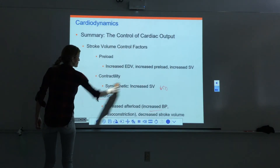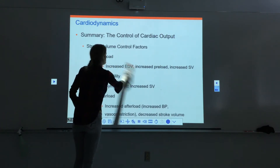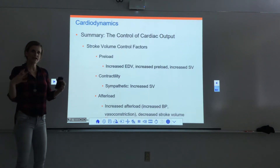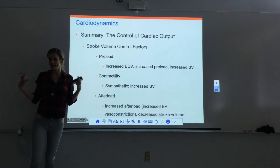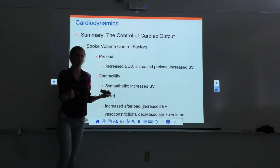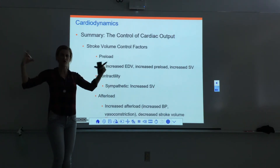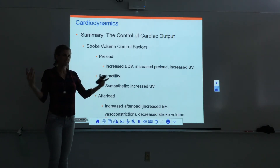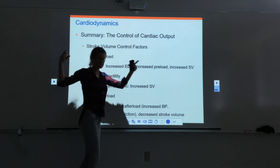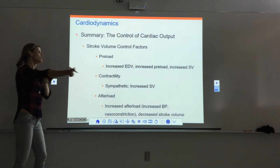Stroke volume can be adjusted by adjusting preload, contractility, and afterload. Preload is how much the ventricle stretches — the end diastolic volume while the ventricle is at rest and filling. As we increase end diastolic volume, we increase preload; it stretches more and, like a rubber band, those elastic components snap harder when stretched further. So as preload increases, it pumps more out, increasing stroke volume and cardiac output.